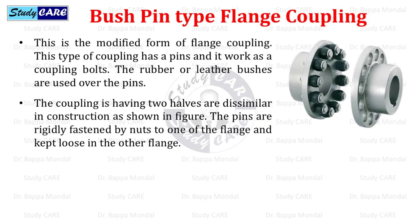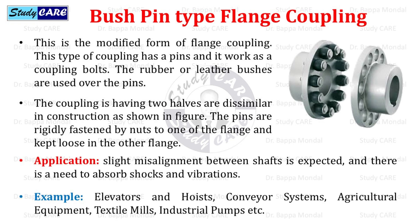Next is bush pin type flange coupling, an example of flexible coupling. It is a modified form of flange coupling that uses pins working as coupling bolts, with rubber or leather bushes over the pins. The two coupling halves are dissimilar in construction; the pins are rigidly fastened by nuts to one flange and kept loose in the other. These are used where slight misalignment is expected and there is a need to absorb shocks and vibrations — for example, elevators and hoists, conveyor systems, agricultural equipment, textile mills, and industrial pumps.